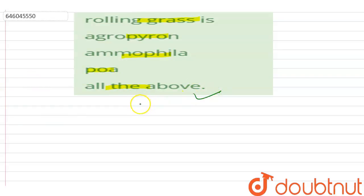As all of these are rolling grasses - agropyron, ammophila, and poa - all the above are rolling grasses.